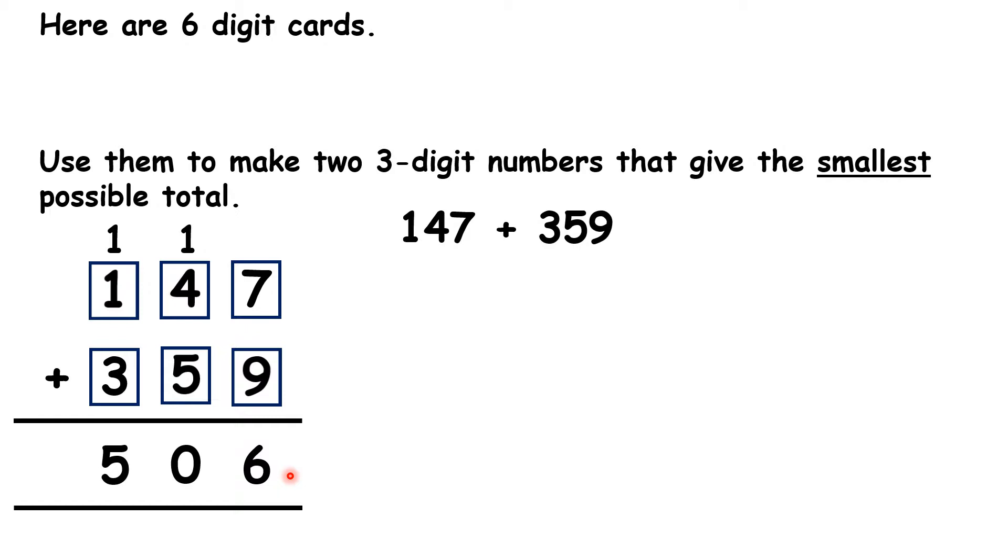Well, with addition, order doesn't matter. So as long as we keep the digits in the same place value column, we can switch them around. So if we switch around our hundreds digits, we have 347 and 159, and this also equals 506.